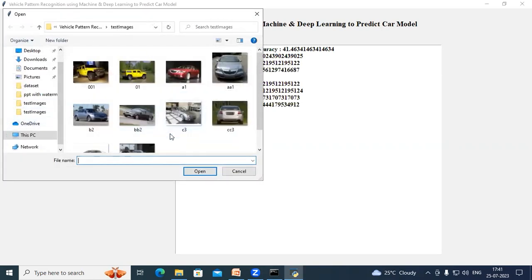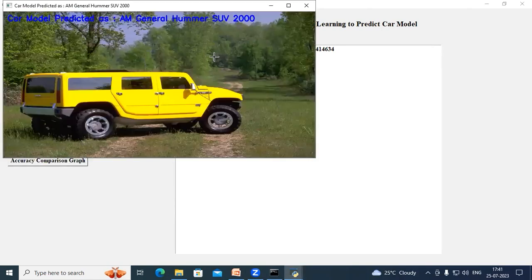Now click on prediction model. A dialog box opens. In this, I have test images. Select any of these images. I am selecting this image and click on open.